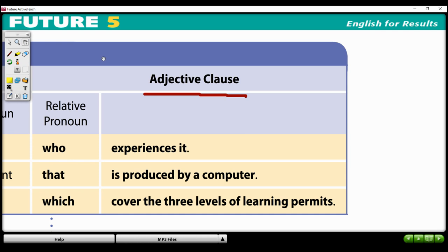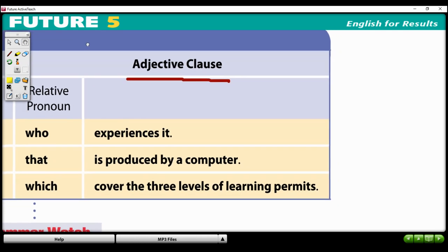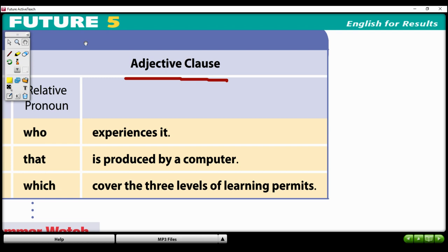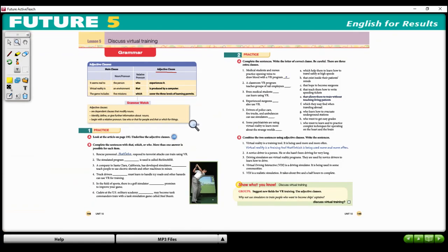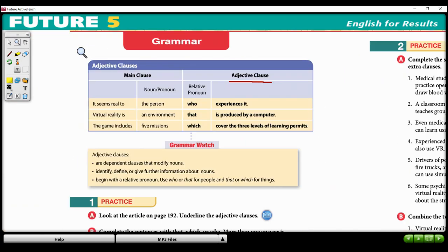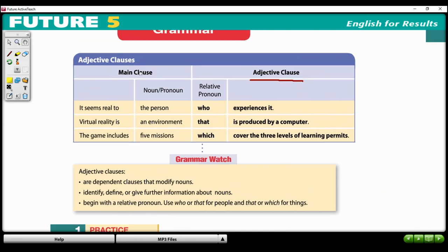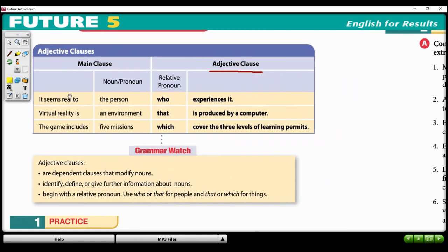So if I come up to you and I say something like, experiences it, or that is produced by a computer, or which cover three levels of learning, those are not complete sentences. And so you don't know my idea, right? So a clause cannot stand alone. It's dependent on something else. And in this case, we're looking specifically at the noun that the clause is describing.